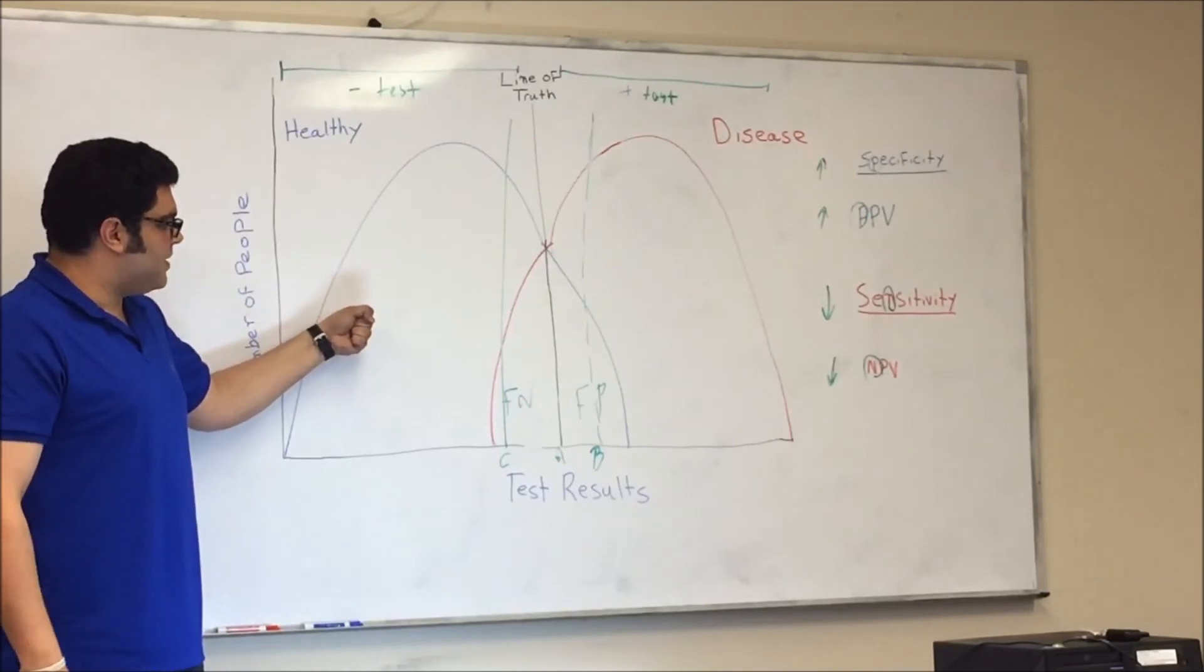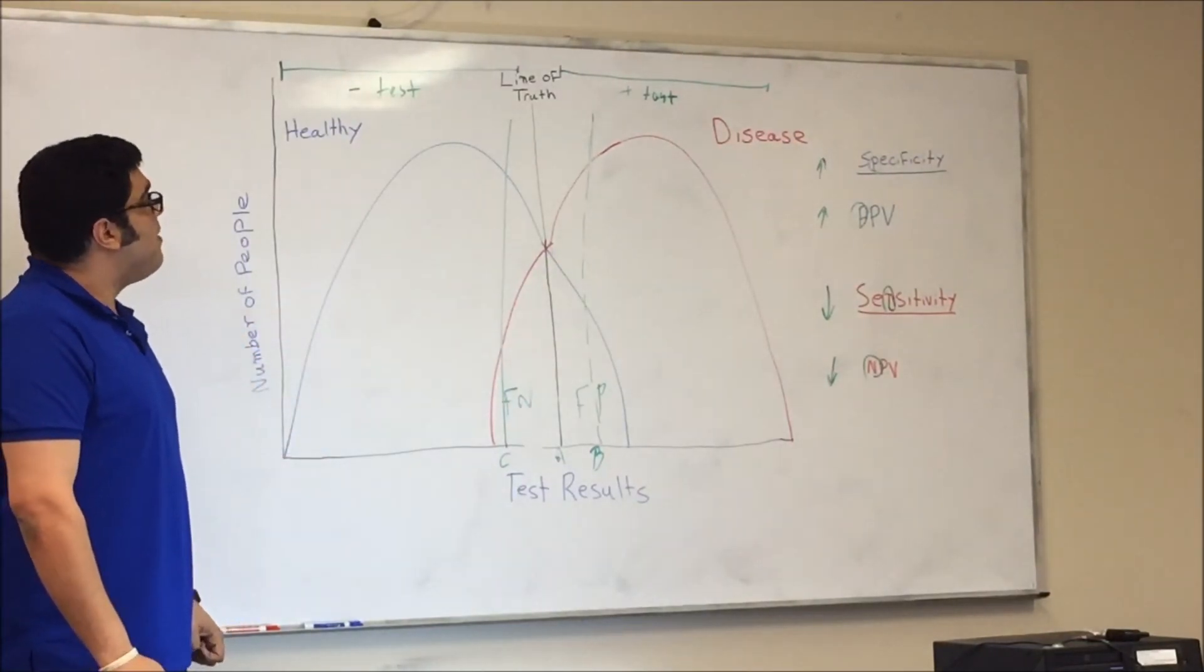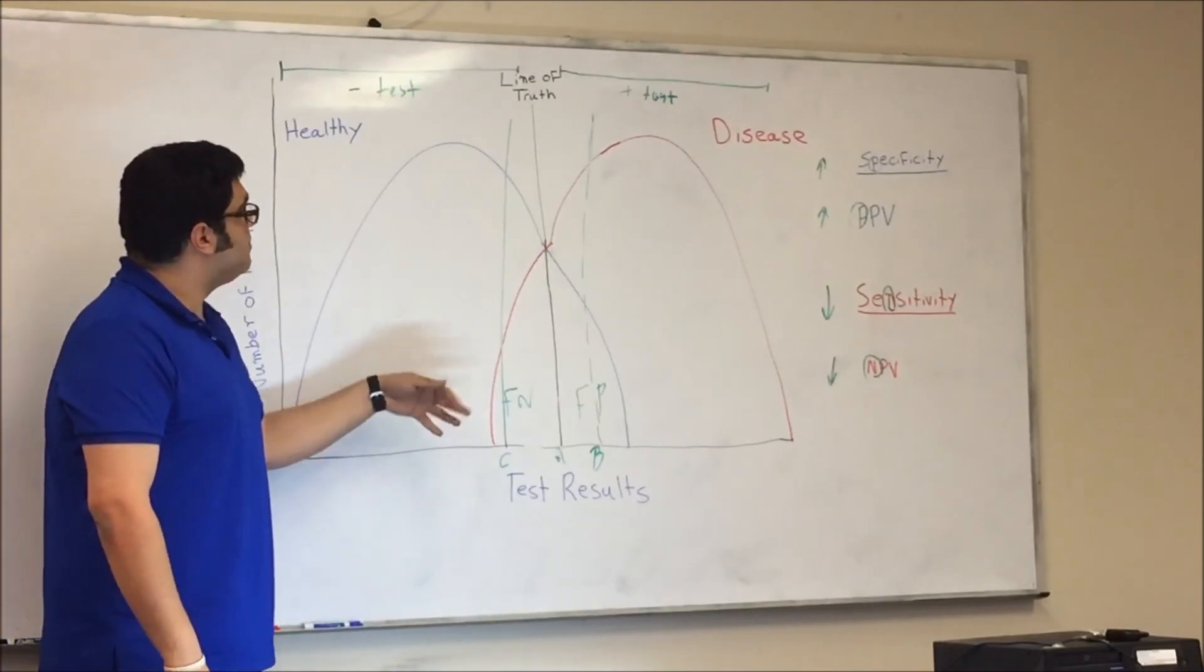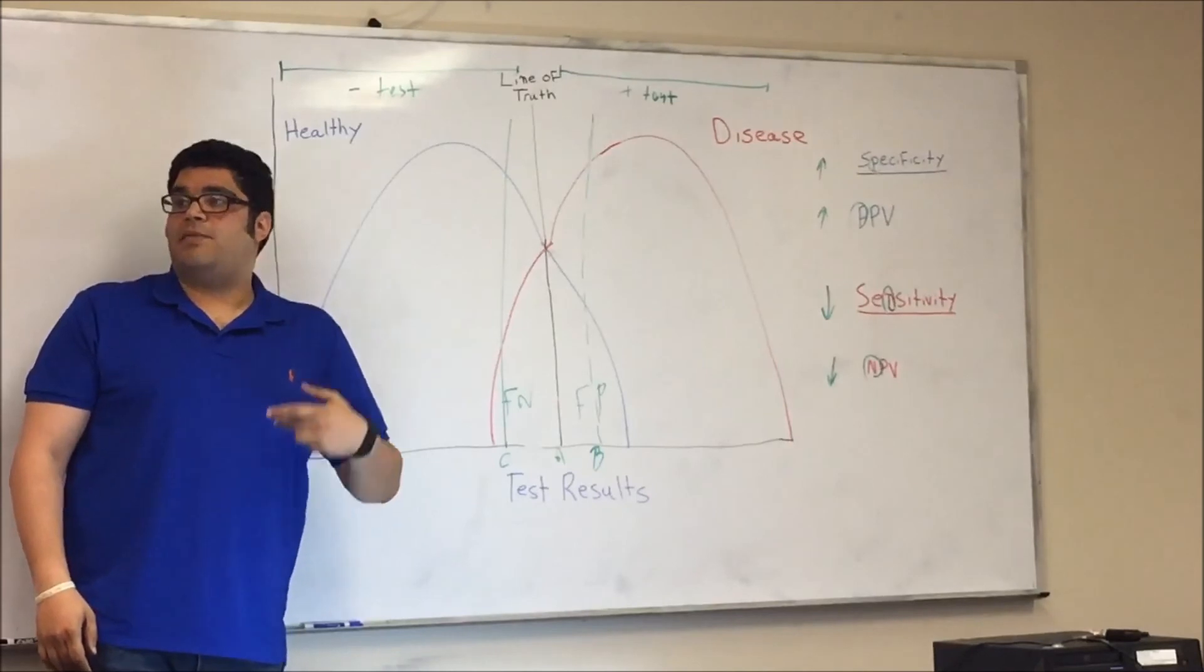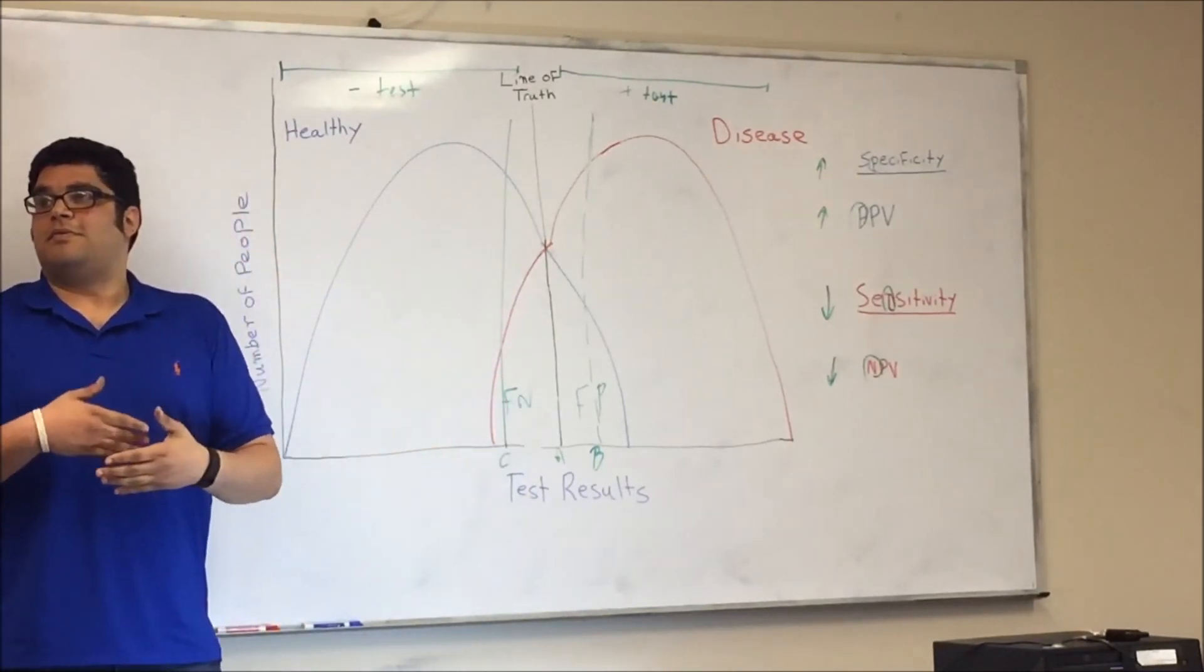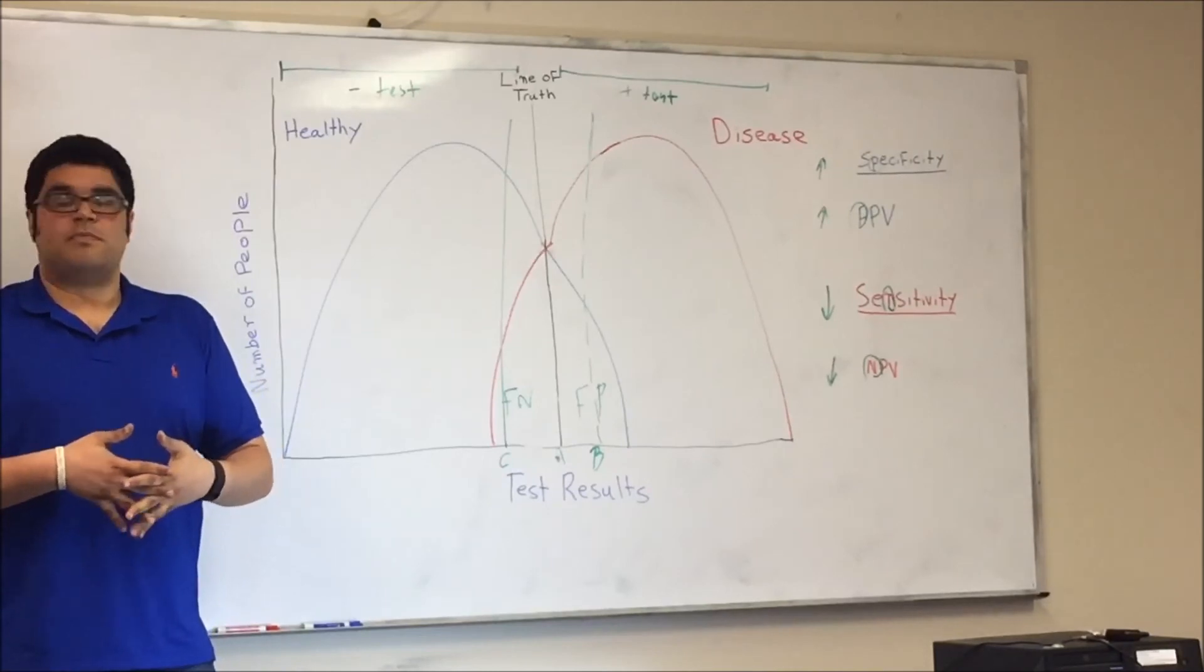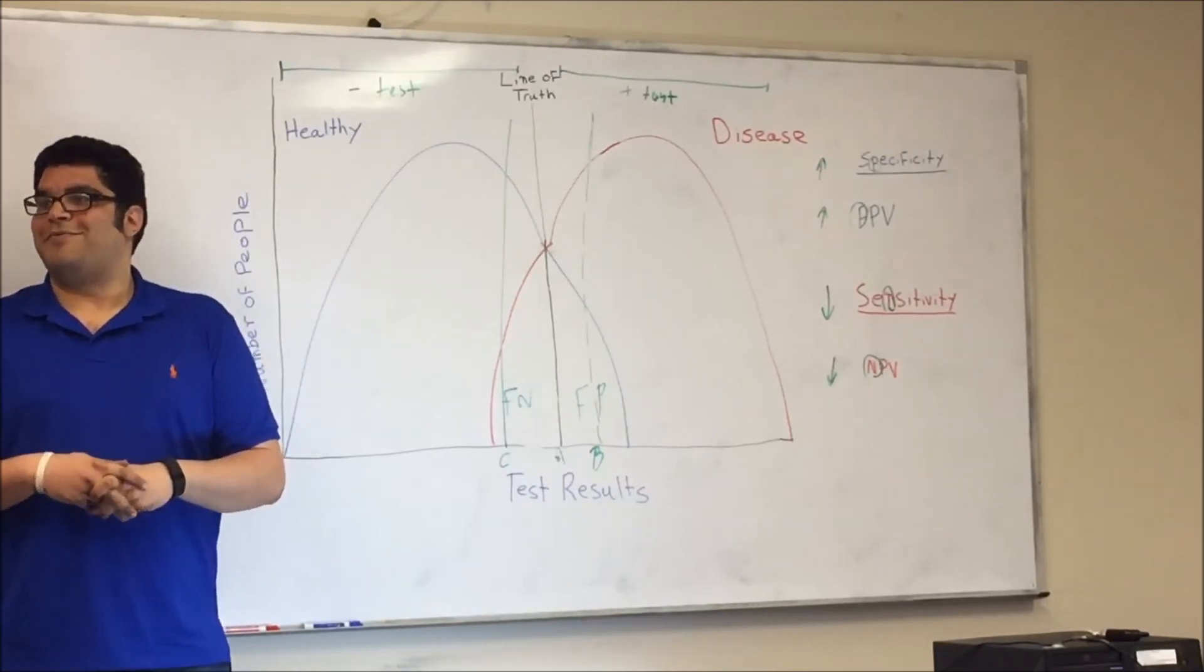Pulling the line towards me. So when you pull the line, how did that affect your healthy people? How many, did we detect less healthy people or more healthy people? We actually detected less healthy people, and we detected more diseased people. Excellent. And that explains why we had the changes in specificity and sensitivity, as you mentioned. Yes. Thank you very much. You're welcome. Thank you. Absolutely.